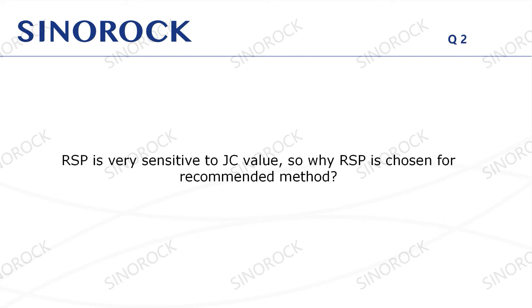Question 2: RSP is very sensitive to JC value, so why is RSP chosen as the recommended method? RSP is a standard case method. If the comparison is performed according to the static load test, a relatively accurate JC parameter can be obtained and the calculated result is relatively accurate. Therefore, when the conditions are not available, we can consider directly using the results of CAPWAP to issue a report. The calculation of CAPWAP is more in line with actual engineering, but the requirements for data quality are very high. You can refer to the training content to improve the quality of on-site data and use CAPWAP's calculation method to get the result.